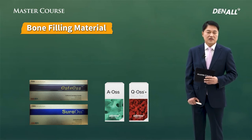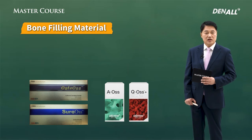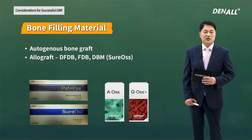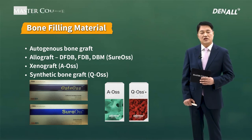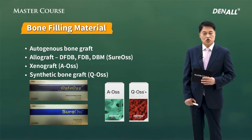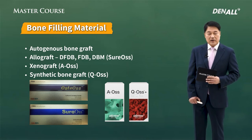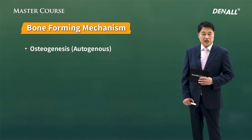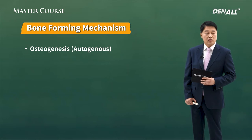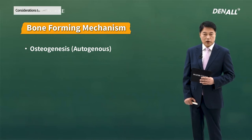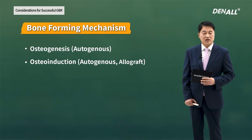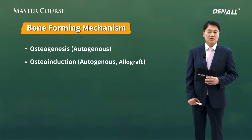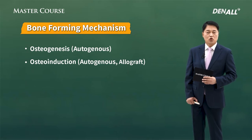Next, I'm going to talk about bone filling material. Bone filling material can be divided into autogenous bone, allograft, xenograft, and synthetic bone graft. The allograft I use frequently is Sureos, and for xenograft I use AOS. For synthetic bone graft, QOS. Looking at the mechanisms for making bone — there's osteogenesis, where the bone you put in becomes bone; only autogenous bone has that effect. And osteoinduction, where you induce bone generation — autogenous bone and allograft both have that effect.